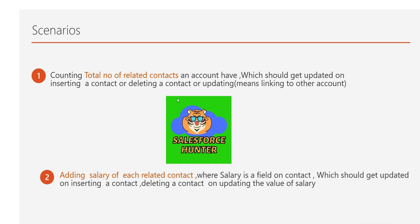The scenarios we are going to discuss: first is counting the total number of related contacts, and the account field should get updated on inserting a contact, deleting a contact, or updating. Updating here means suppose there is account A having a contact. Now we are delinking that contact and connecting it with account B. In that scenario, the total number of related contacts of account A would decrement and the account with which it gets linked will increment.